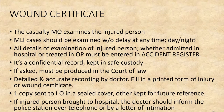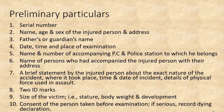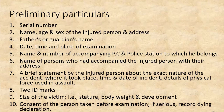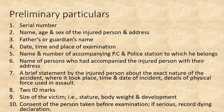If the injured person is brought to the hospital, the doctor should inform the police station by telephone or letter. Preliminary particulars to be recorded include: serial number, name, age and sex of injured person, address, father's or guardian's name, date, time and place of examination, name and number of accompanying police constable and police station, name and address of accompanying persons, and a brief statement by the injured person about the exact nature of the accident, where it took place, time and date of incident, details of physical force used in assault, two identification marks, and the stature, body weight and development of the victim. Consent of the person should be taken before examination.